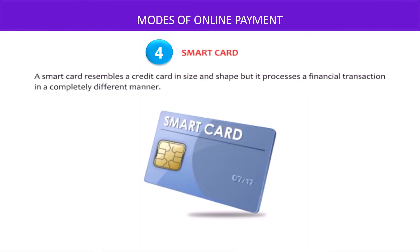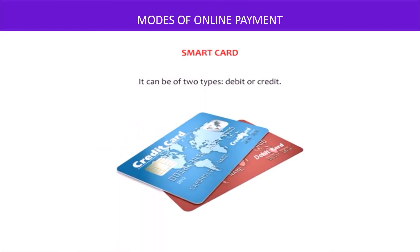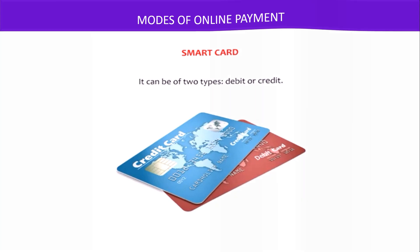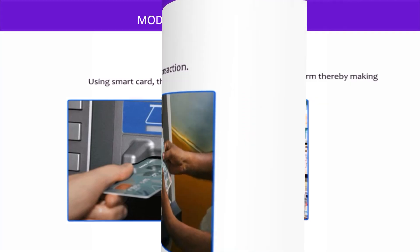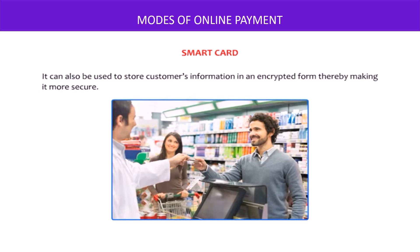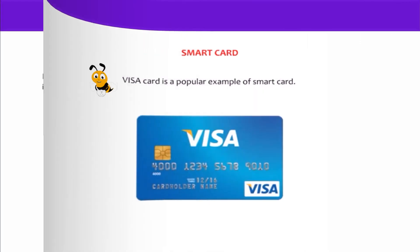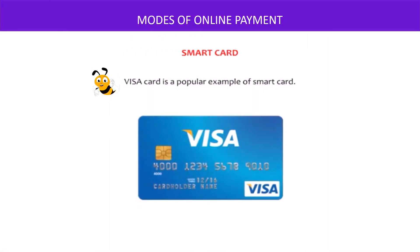Smart card. A smart card resembles a credit card in size and shape but processes a financial transaction in a completely different manner. It can be of two types: debit or credit. The cash from the user's bank account is transferred to the smart card. Using a smart card, the user can do any type of online transaction. It can also be used to store customer information in an encrypted form, thereby making it more secure. Visa card is a popular example of a smart card.